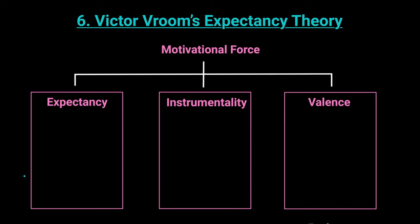Number six on our list is Victor Vroom's expectancy theory. And if you ever forget about him, just think of a motorcycle - vroom vroom. Mr. Victor Vroom's theory on what motivates and drives people is divided into three parts. He says that the combination of expectancy, instrumentality, and valence together will form the motivational force needed to drive the entire workforce forward. We need to understand what these three parts individually are, and then how they combine to form a motivated workforce.